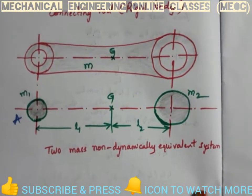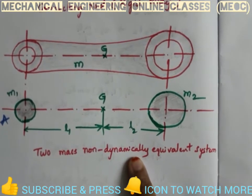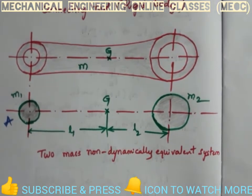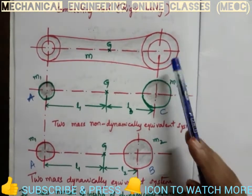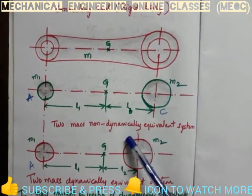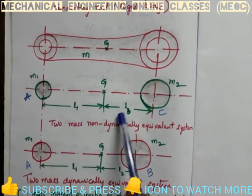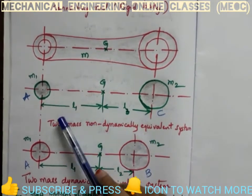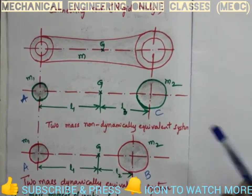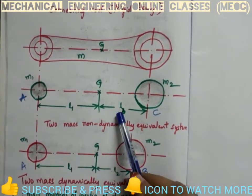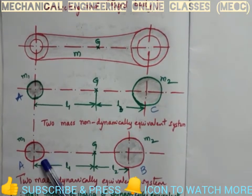That will make the system only a two-point mass statically equivalent system but not dynamically equivalent. So in such a situation, we have to convert the non-dynamically equivalent system into a dynamically equivalent system by adding a correction couple. When M1 and M2 locations are fixed and L1 and L3 are not chosen from the condition L1·L2 = Kg², that means L1·L3 ≠ Kg², and the system is non-dynamically equivalent.